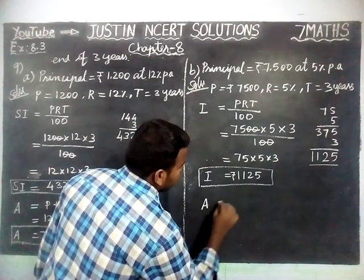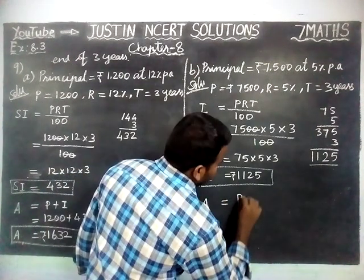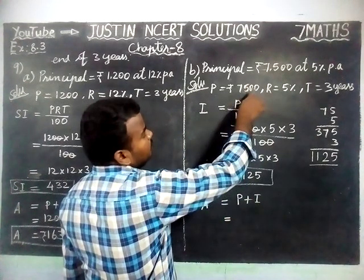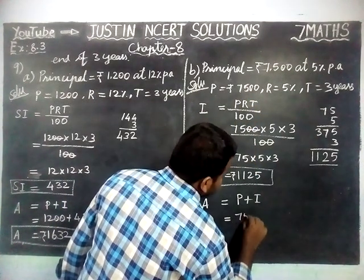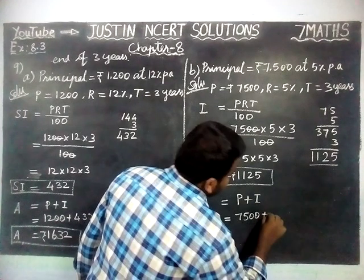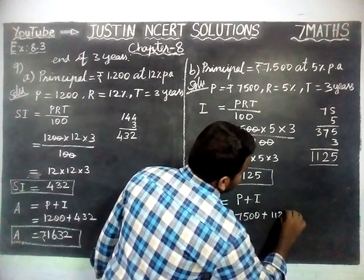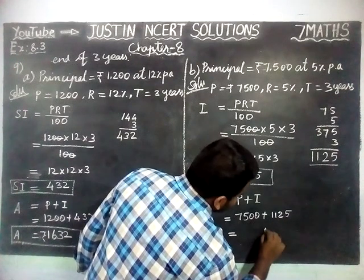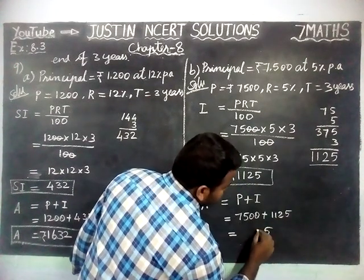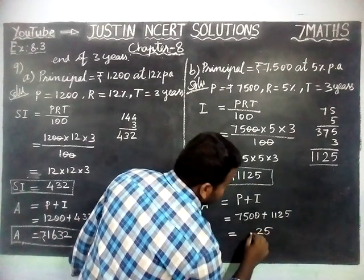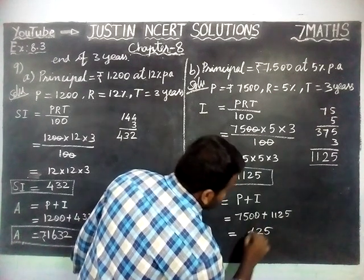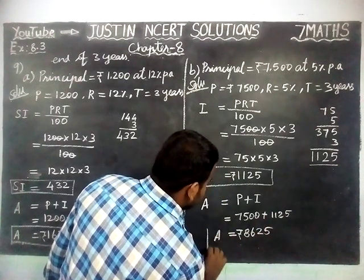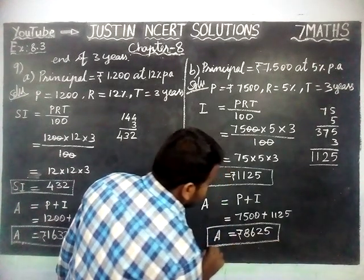We have to find the Amount. Amount A is equal to Principal plus Interest, which equals 7500 plus 1125. Therefore Amount A is equal to Rs. 8625.